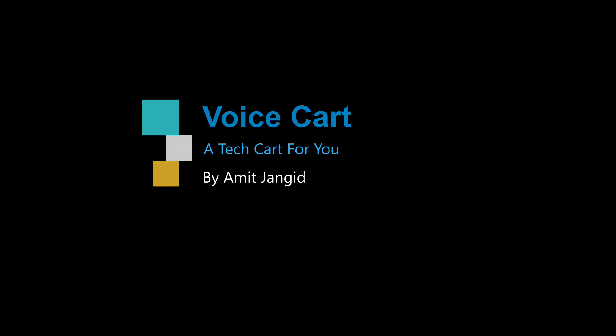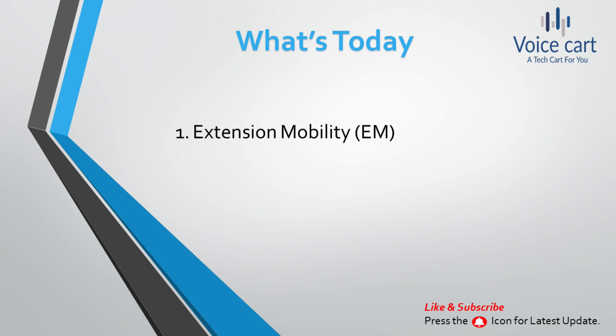Hello tech peeps, I'm Amit and I welcome you to my YouTube channel Voice Card. In today's lab we are discussing a very important feature of CUCM — that is Extension Mobility. Cisco Extension Mobility allows users to temporarily access their phone settings such as line appearances, services, and speed dials from other phones within your system. If you have a single phone that will be used by multiple workers, you can configure this feature so that individual users can log in and access their settings without affecting other user accounts.